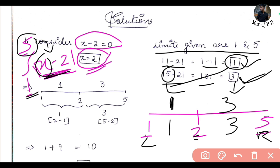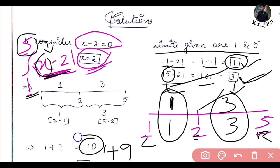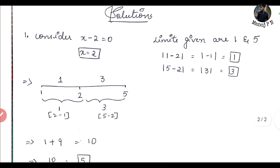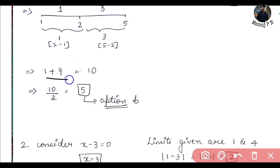Next step: 1 squared and 3 squared. What is 1 squared? It is 1. What is 3 squared? It is 9. Now add these two: 1 plus 9 which gives you 10. So 1 plus 9 equals 10.